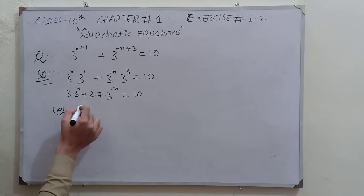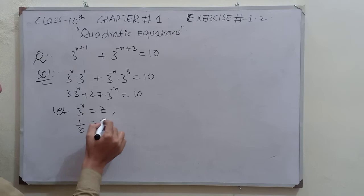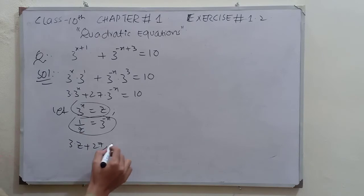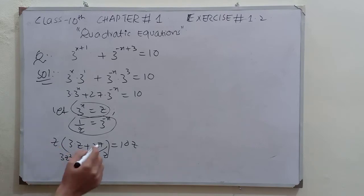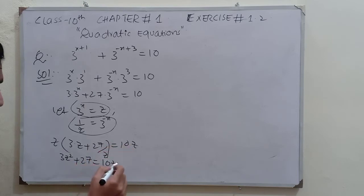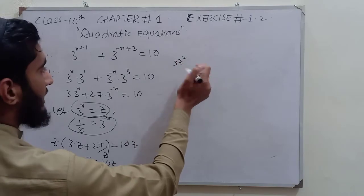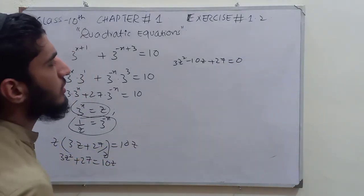Now we make a substitution: let 3^x equal z. Reciprocating both sides, 3^(-x) equals 1/z. Substituting these values, we get 3z plus 27/z equals 10. Multiplying both sides by z: 3z² plus 27 equals 10z. Rearranging, we get 3z² minus 10z plus 27 equals 0.